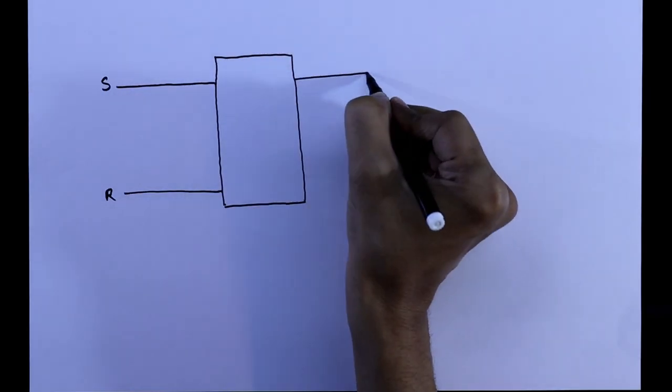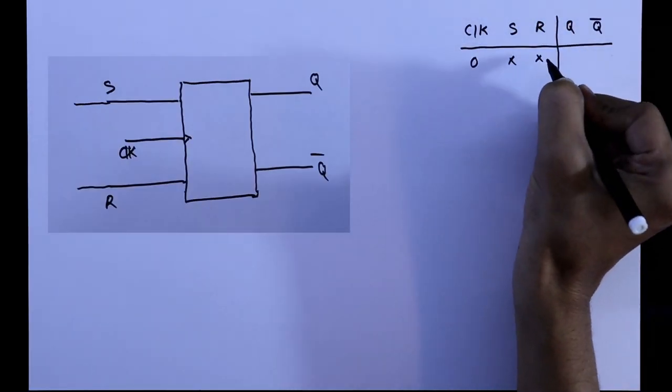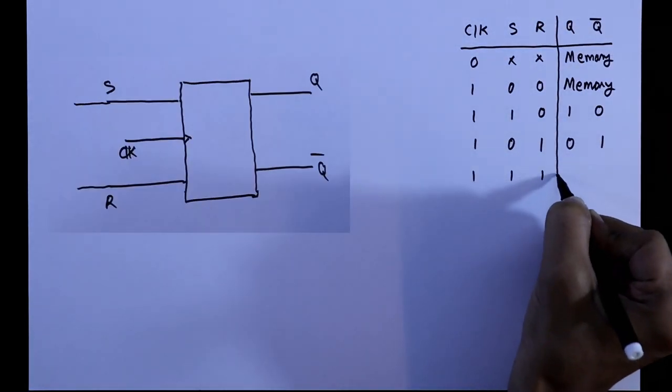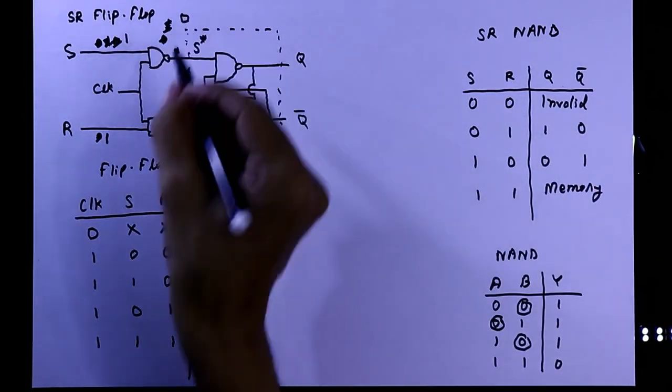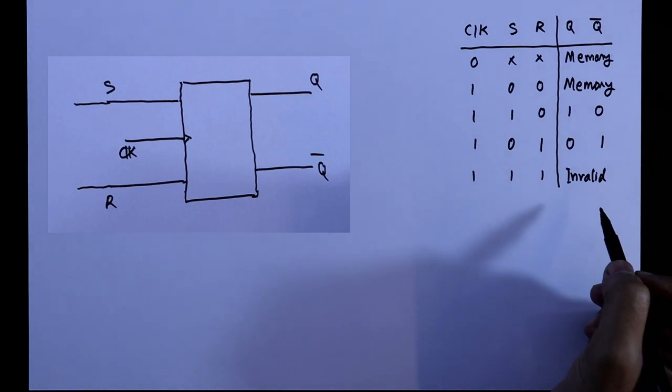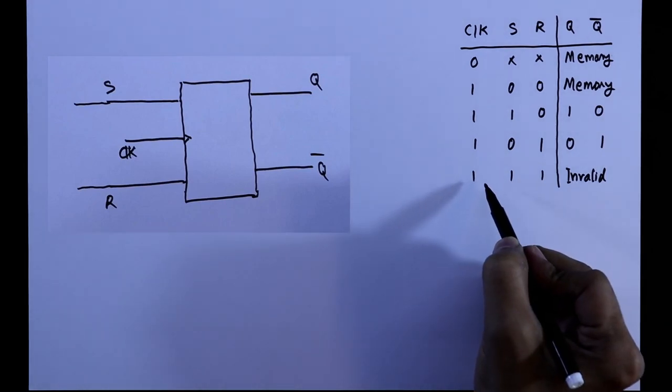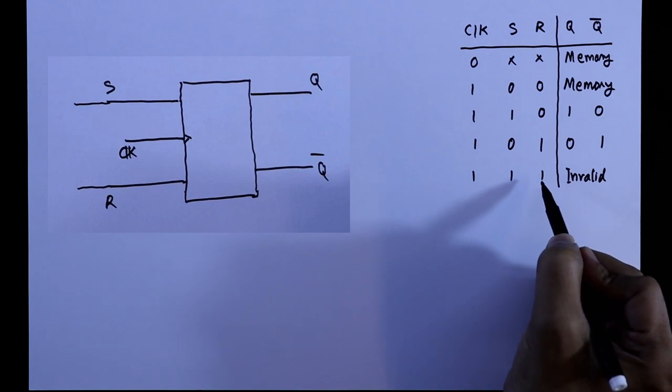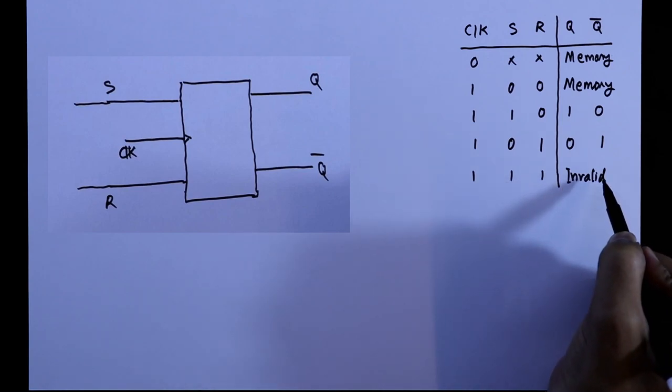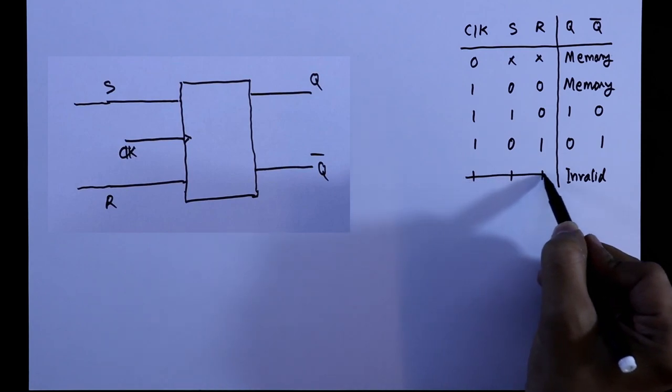This is the SR flip-flop and this is the truth table of SR flip-flop. In that video I explained in detail how we are getting this truth table. From this we can understand that if clock is 1 and SR both are 1, then the output will be invalid.